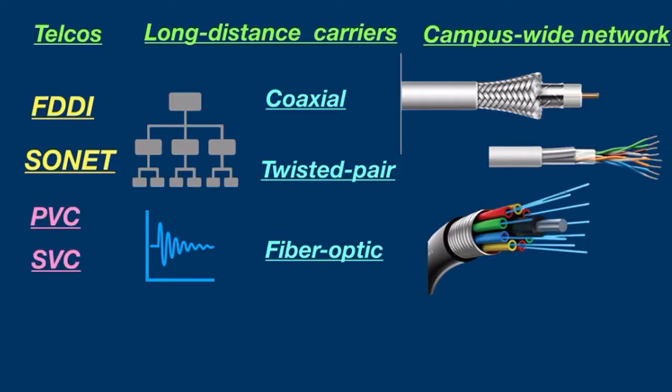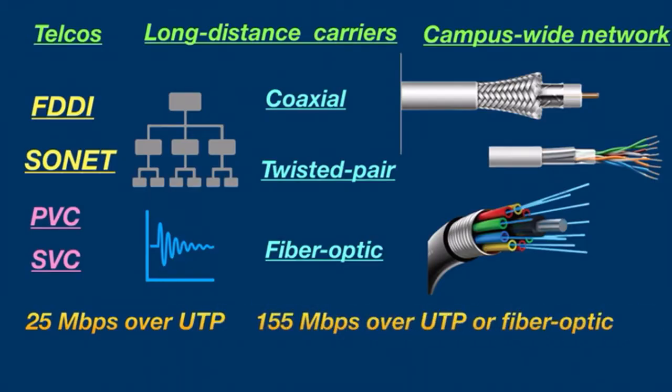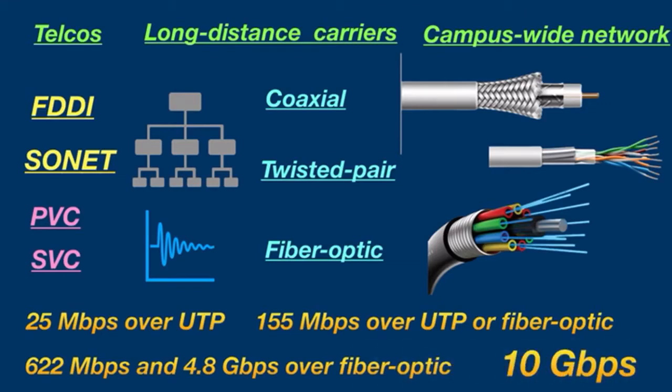ATM speed varies with transmission media, for example, 25 megabytes per second over UTP Category 5 cabling, 155 megabytes per second over either UTP or fiber optic, 622 megabytes and 4.8 gigabytes over fiber optic cabling. Speed on an ATM network can reach up to 10 gigabytes per second.